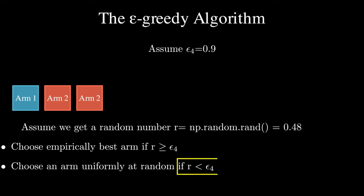We see that the random number is smaller than epsilon 4. Thus, we choose an arm at random again. This time we choose arm 1.